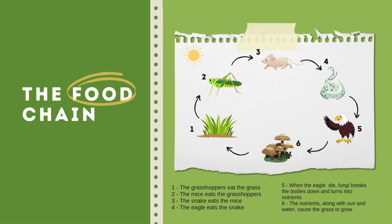Coming to the food chain. Here in the picture we can see the grass. A grasshopper eats the grass, then the mice eats the grasshopper, then the snake eats the mice, and the eagle eats the snake. When this eagle dies, fungi breaks the body down and turns it into nutrients. The nutrients along with sun and water cause the grass to grow.